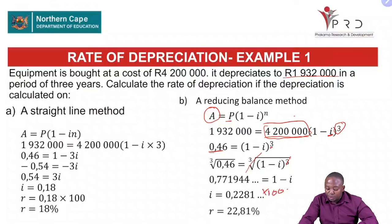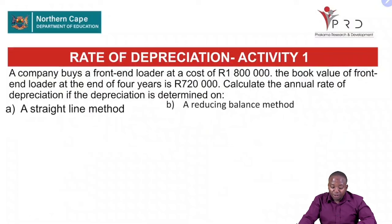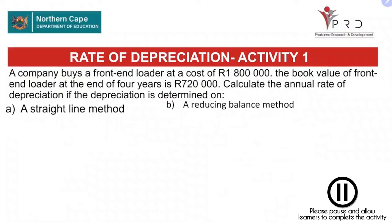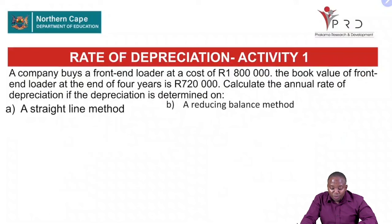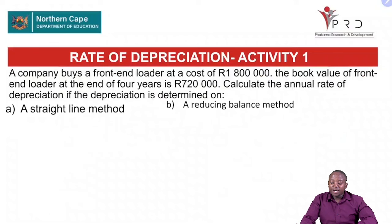Now let us have the following activity. I will give you two minutes to complete it. We are told that a company buys a front-end loader at a cost of 1,800,000 and the book value at the end of four years is 720,000. Calculate the annual rate of depreciation if depreciation is determined on: A — straight line, and B — reducing balance.